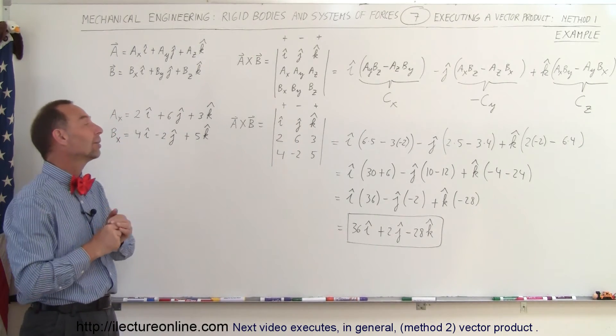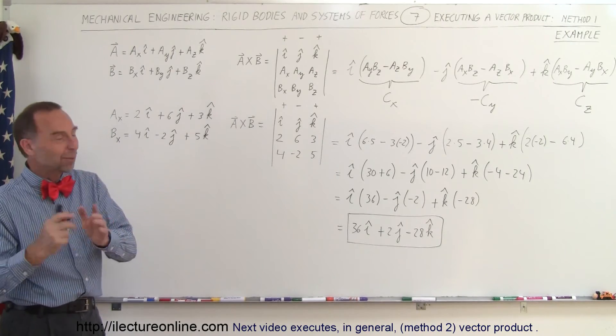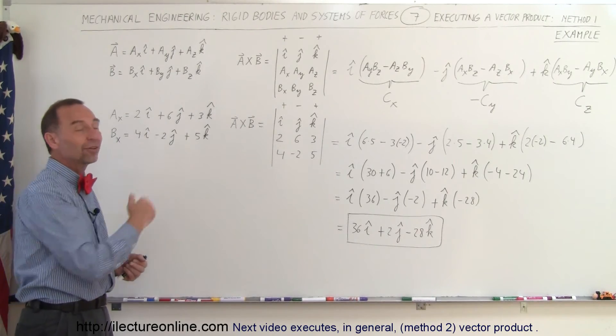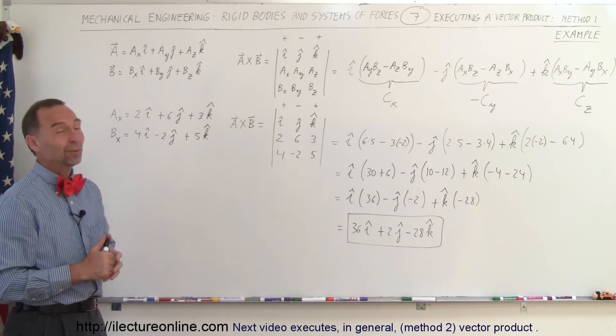Now, what do you think we're going to get if we were to go B cross A, not B minus A, but B cross A? We simply would get the negative, or the opposite of that, so all the signs would simply change. Go ahead and try that and see what happens.